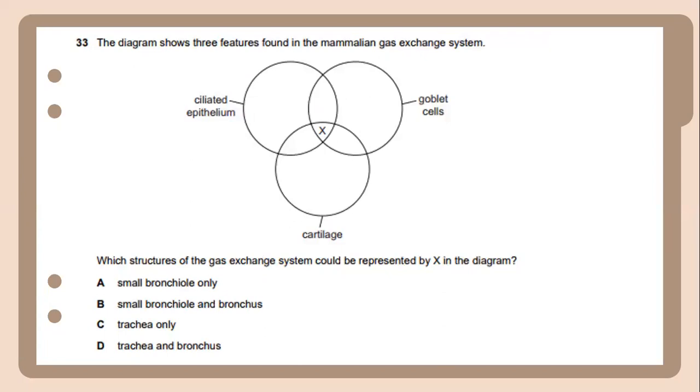The diagram shows three features found in the mammalian gas exchange system. Which structure of the gas exchange system could be represented by X in the diagram? The features found in the mammalian gas exchange system are ciliated epithelium and goblet cells. The structure represented by X could be a small bronchus.